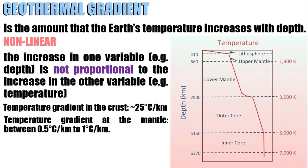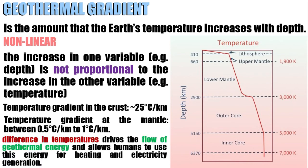The temperature gradient at the mantle is between 0.5 degrees Celsius per kilometer to 1 degree Celsius per kilometer. The difference in temperatures drives the flow of geothermal energy, which humans use for electricity. Again, the geothermal gradient is non-linear.